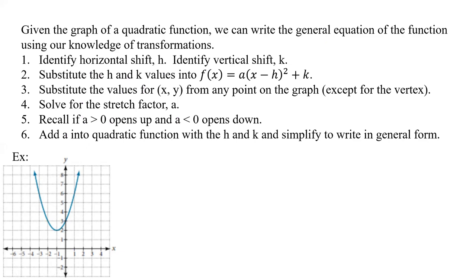So what do we have here? We have to figure out all the points we know off of our graph. If we go over here, we have this point which is the vertex, and that gives us also the axis of symmetry. We can also pull off some other points. This one looks like we have a point at 0, 3. What was this one? It was negative 1, 2.